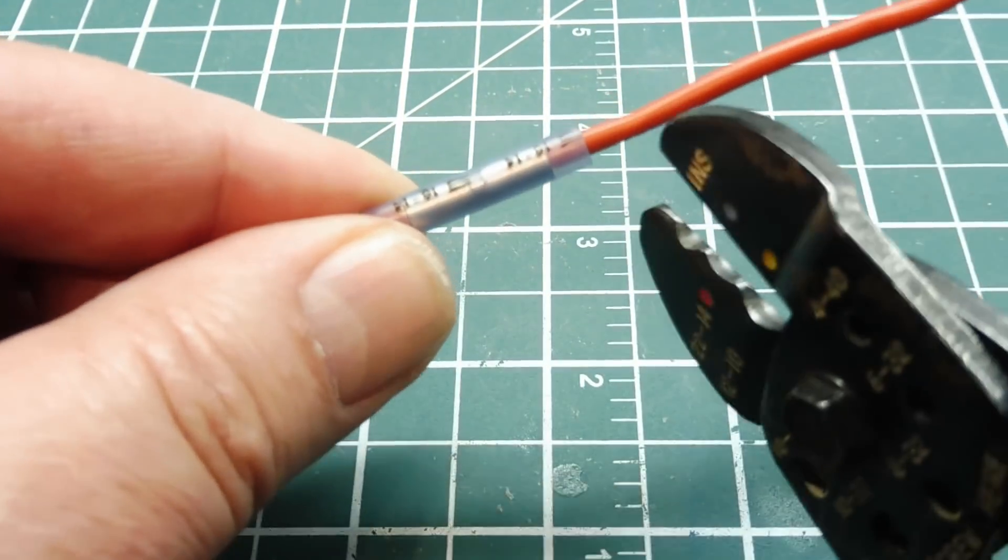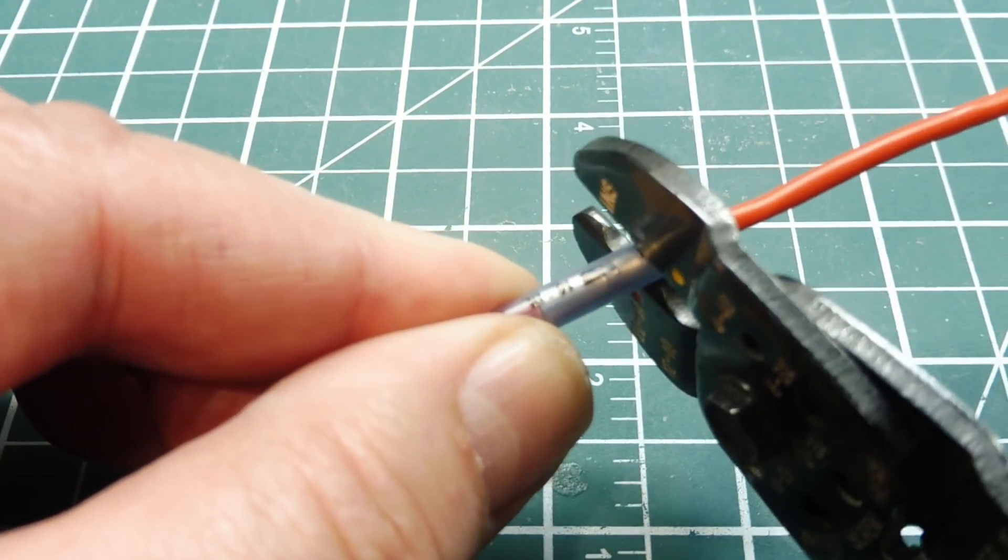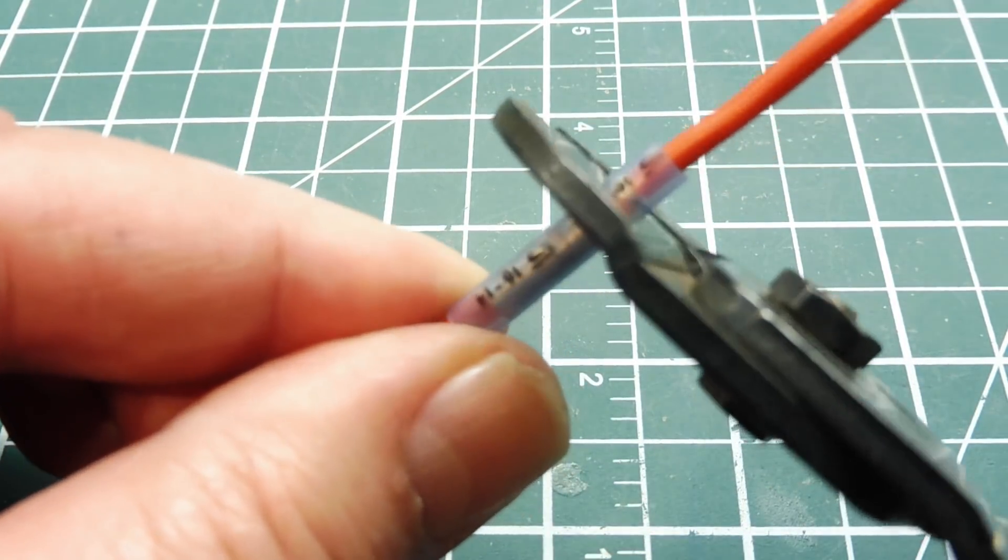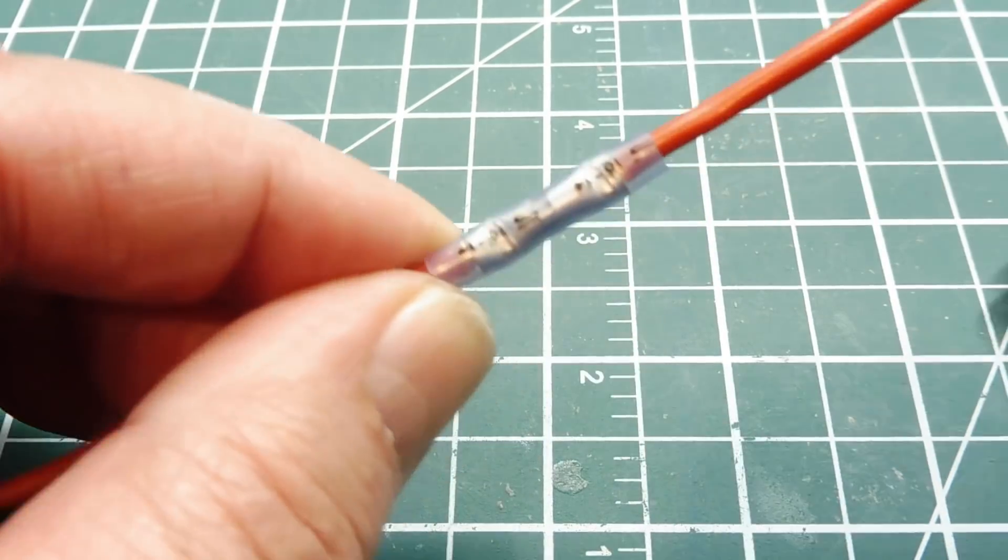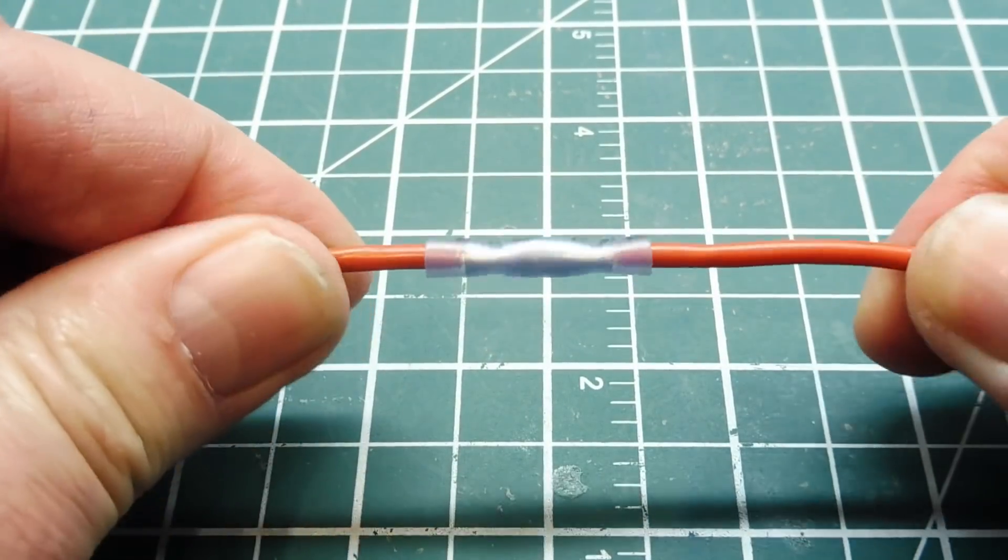We take our crimper, and you crimp one side, and then we crimp the other side. So there's our crimp, it's very tight.